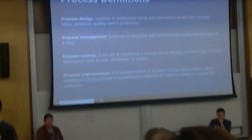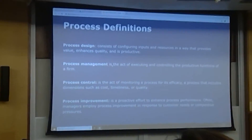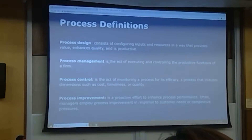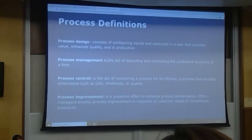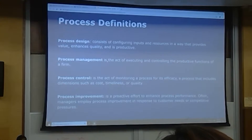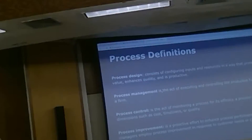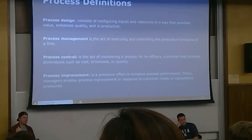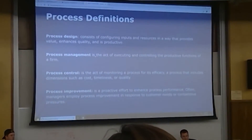Process management is when we actually execute it. Process control is when you monitor it to see how it can be further improved. So once you've implemented something, you monitor it for efficiency, cost, timeliness, quality — whatever you're trying to do on the crew level. And then improvement is when you take that information from the control and try to make the process more efficient.